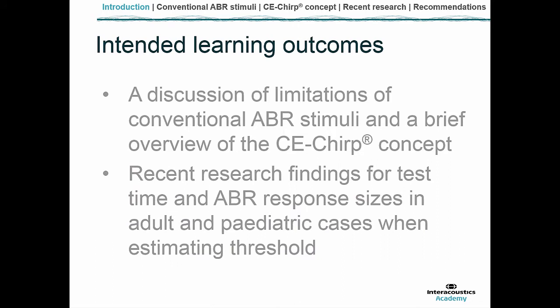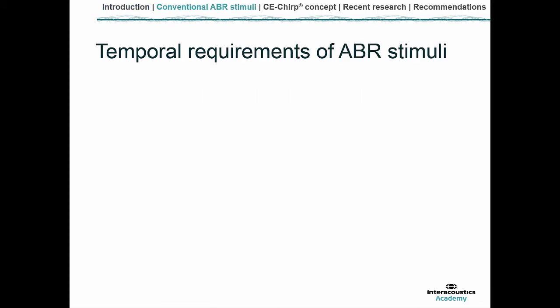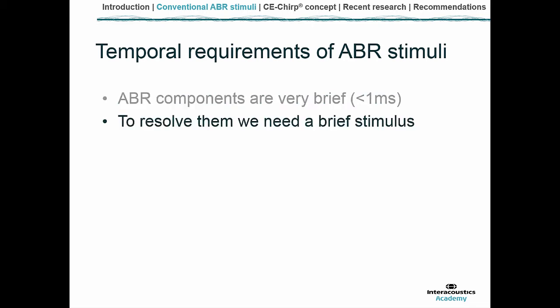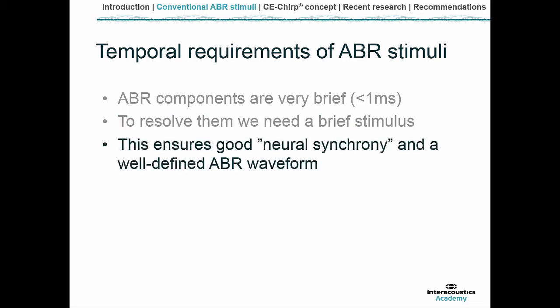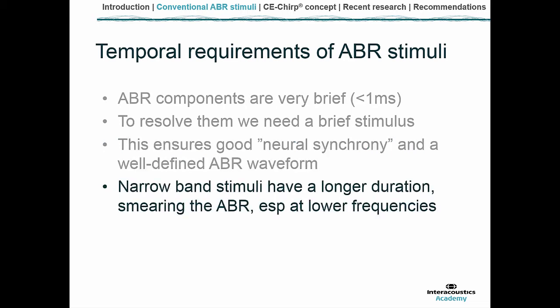The ABR is a true neurogenic potential which occurs within 10 milliseconds of a suitable auditory stimulus being presented. The components — the peaks and troughs — are very brief, less than one millisecond in duration. To resolve the components we need a very brief stimulus, ensuring good neural synchrony and a well-defined ABR waveform. Narrowband stimuli have a longer duration and this can smear the ABR, especially at lower frequencies.